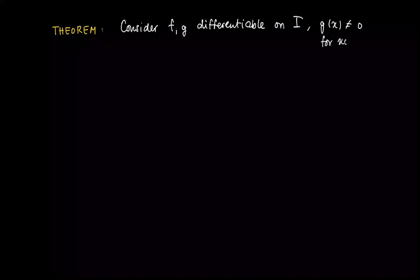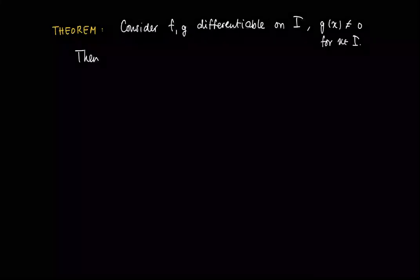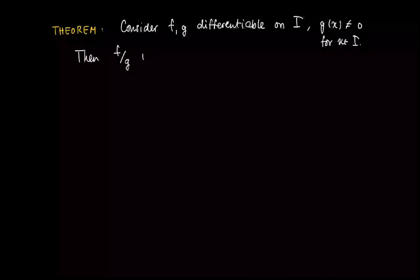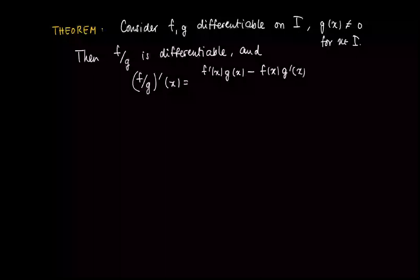Then of course we may define the quotient, f divided by g, and this function is also differentiable. We may also find its formula for its derivative since it's equal to f prime times g minus f times g prime, divided by g squared, g of x squared.